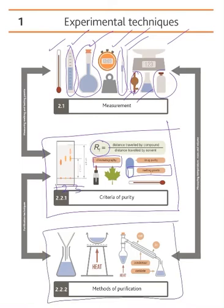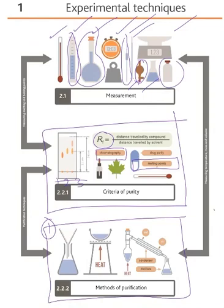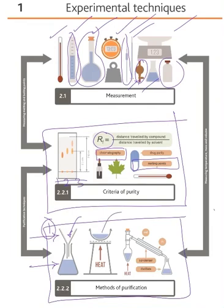The last part covers methods of purification. The first one is filtration. We have a conical flask and a funnel, and inside the funnel there is filter paper which traps the insoluble compounds. The next method is drying a compound, especially when you are doing crystallization — you are drying a solution to get the crystals of the compound.